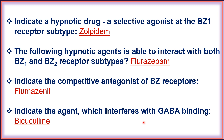A hypnotic drug that is a selective agonist at the benzodiazepine-1 receptor subtype is zolpidem. The hypnotic agent able to interact with both benzodiazepine-1 and benzodiazepine-2 receptor subtypes is flurazepam. The competitive antagonist of the benzodiazepine receptor is flumazenil.